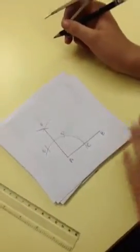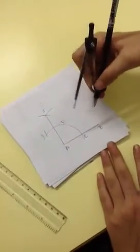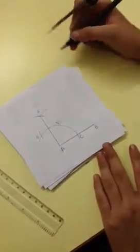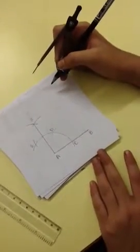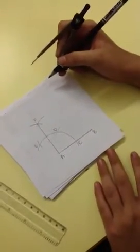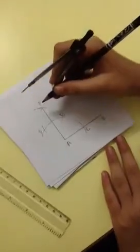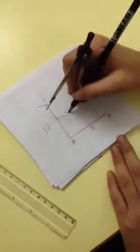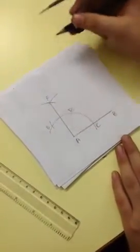Angle FAB is a 90 degrees angle and angle DAB is a 60 degrees angle. And 90 minus 60 is equal to 30. So angle FAD is equal to 30 degrees.